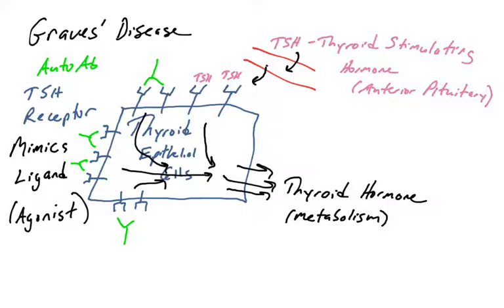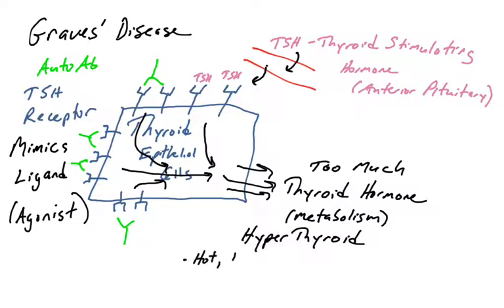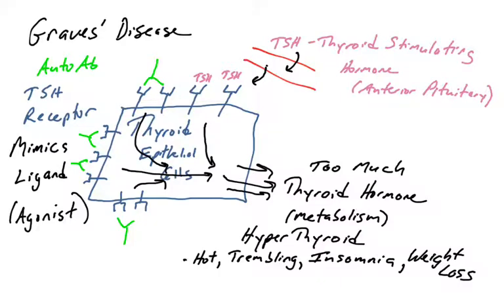The TSH level could be very low in these individuals, but the autoantibody is binding the TSH receptor, triggering signaling into the cell, and the cell produces thyroid hormone — a lot of it, all the time. So these individuals suffer from too much thyroid hormone production, also known as hyperthyroidism. Symptoms include increased body temperature, tremors, insomnia, and weight loss, all due to the overproduction of thyroid hormone caused by antibodies binding the TSH receptor.